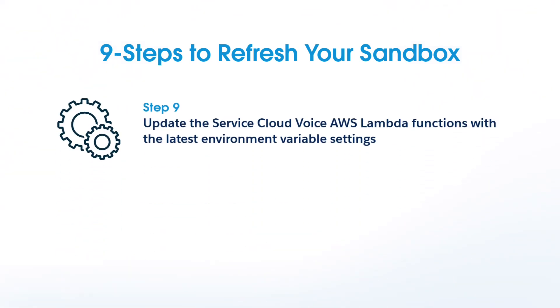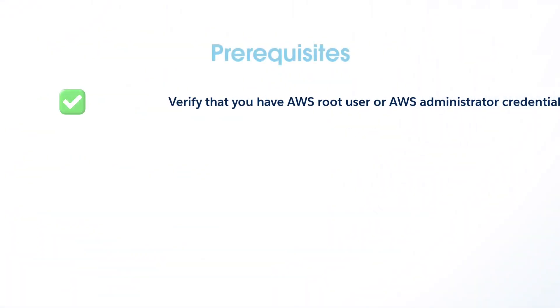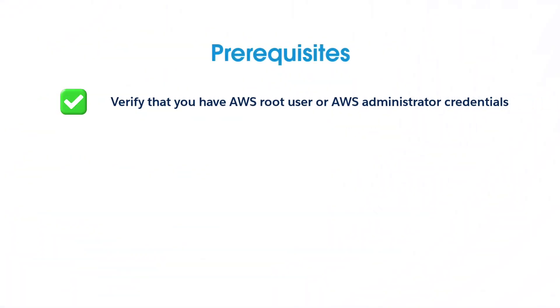It's important to map the identity provider IDP certificate to the connected apps and update the AWS IAM Salesforce Service Voice IDP identity provider with the latest IDP certificate. Update the Service Cloud Voice AWS Lambda functions with the latest environment variable settings. Before you begin the sandbox refresh process, there are a few prerequisites to keep in mind.